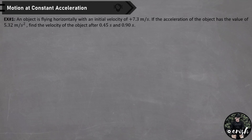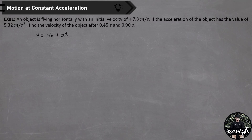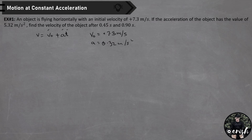Example number 1. An object is flying horizontally with an initial velocity of positive 7.3 meters per second. If the acceleration of the object has the value of 5.32 meters per second squared, find the velocity of the object after 0.45 seconds and 0.9 seconds. In this problem, we need to find two answers depending on the given time: after 0.45 seconds and after 0.9 seconds. Since velocity is related to acceleration and time, we use the formula V equals V-sub-O plus A times T.